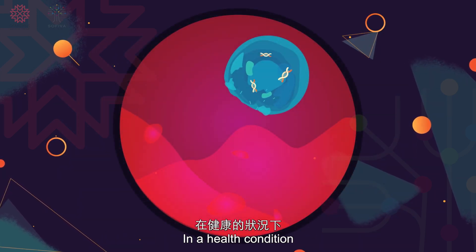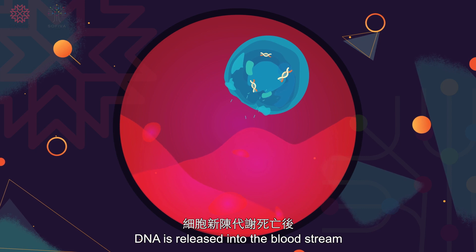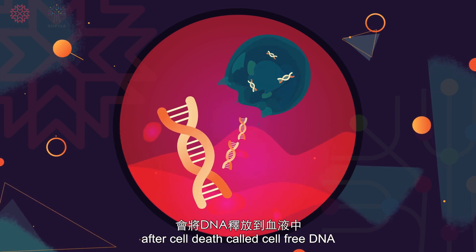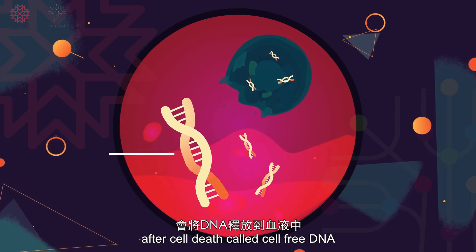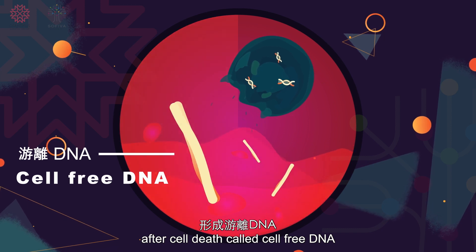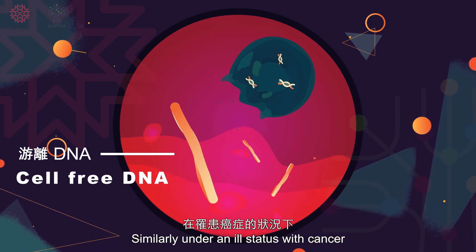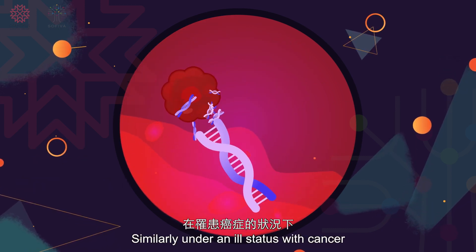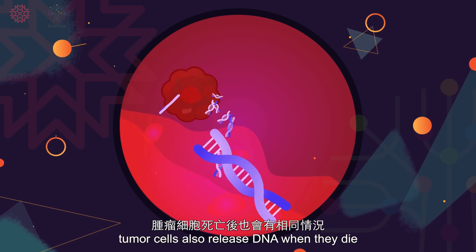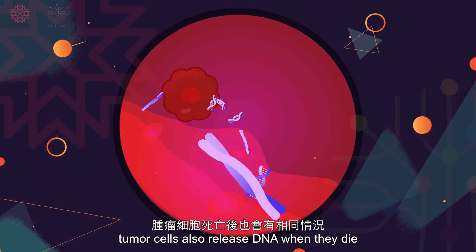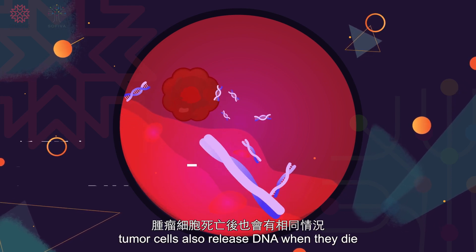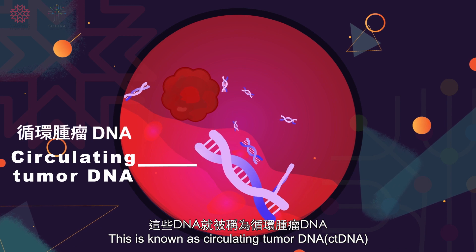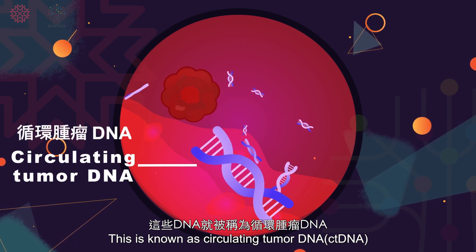In a healthy condition, DNA is released into the bloodstream after cell death, called cell-free DNA. Similarly, under an ill status with cancer, tumor cells also release DNA when they die. This is known as circulating tumor DNA.